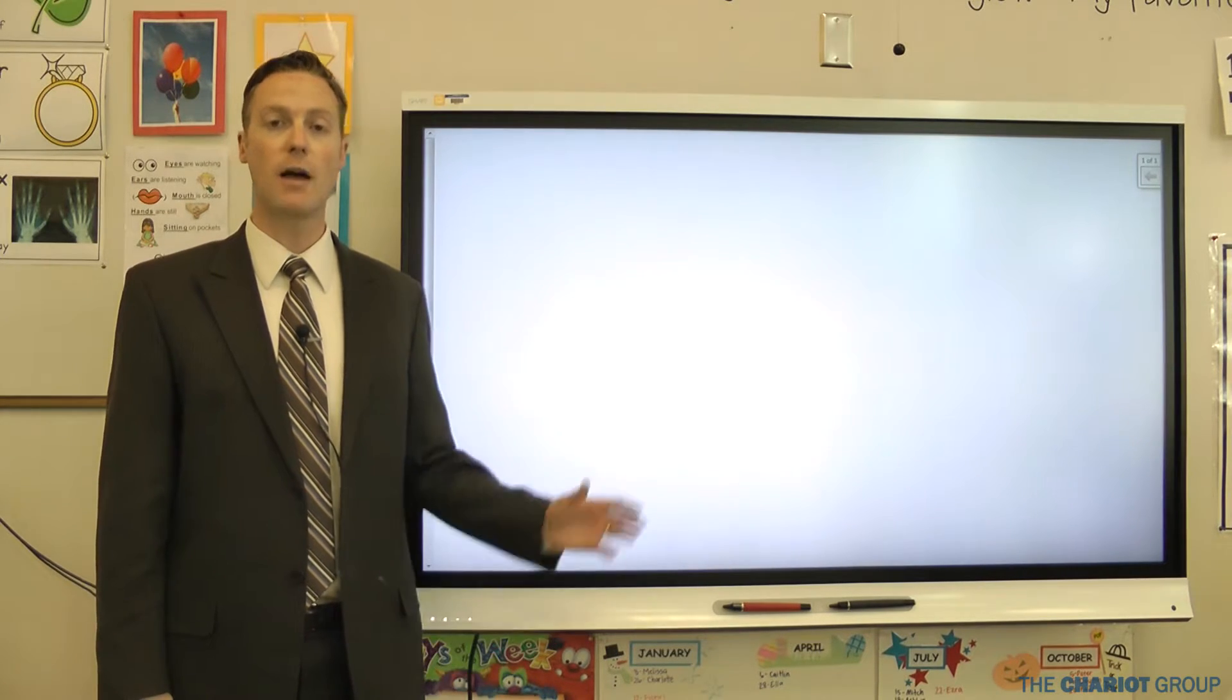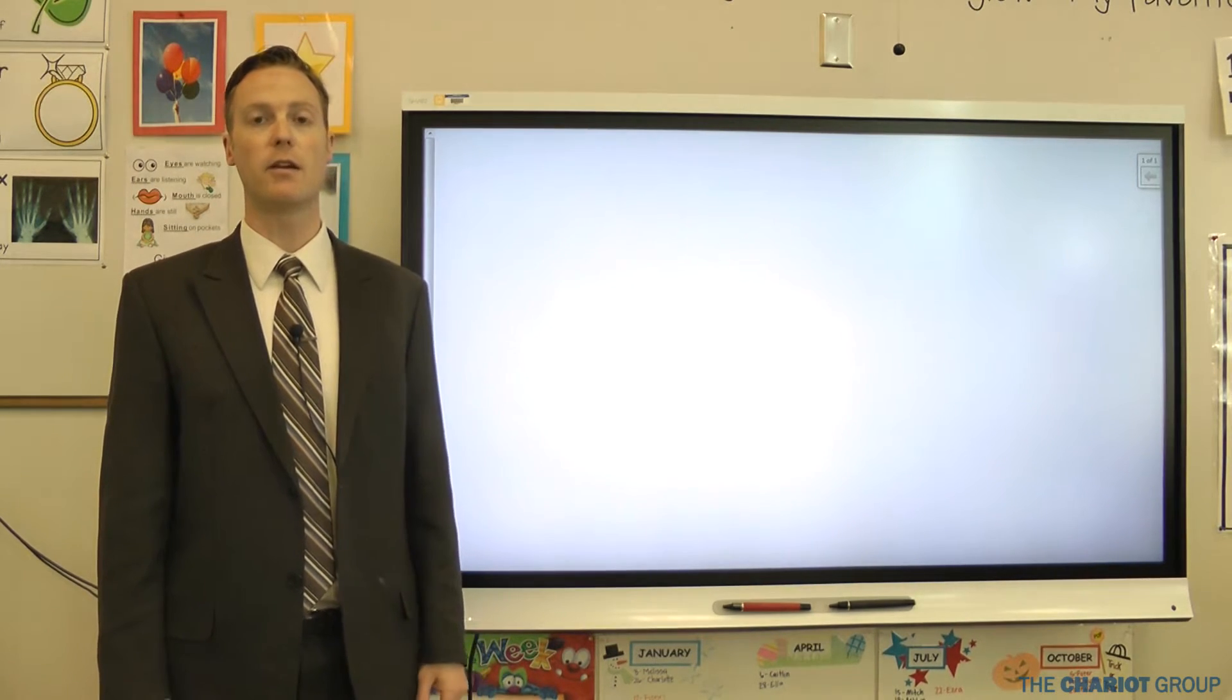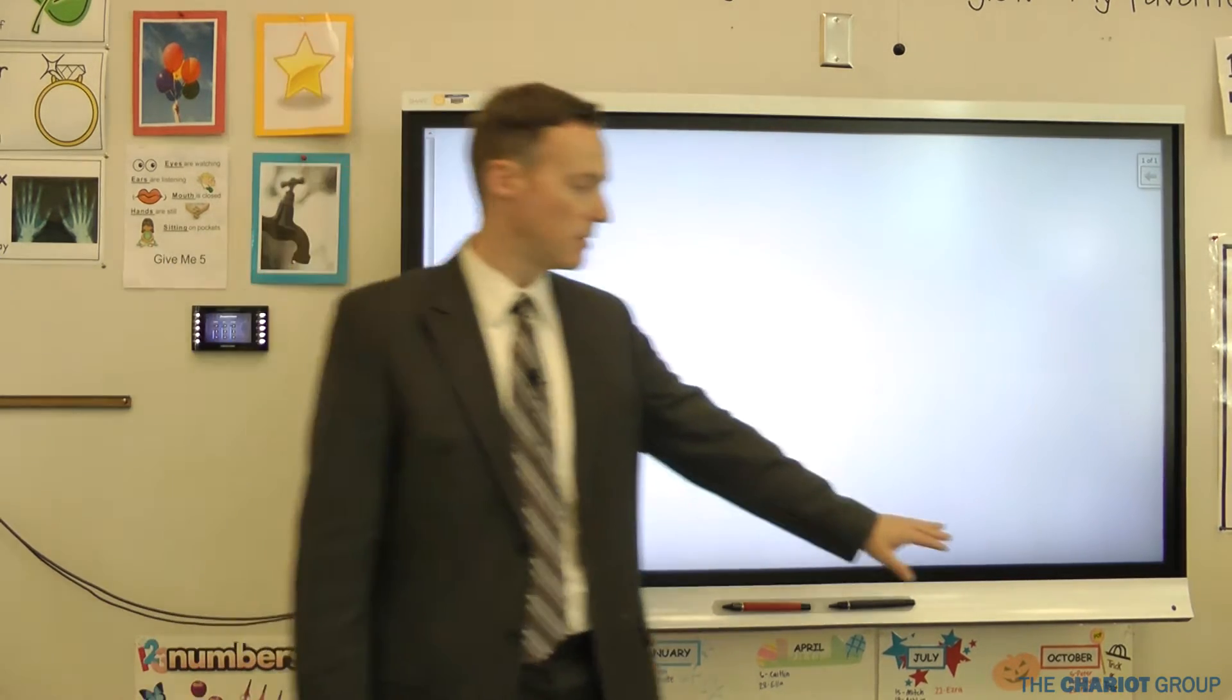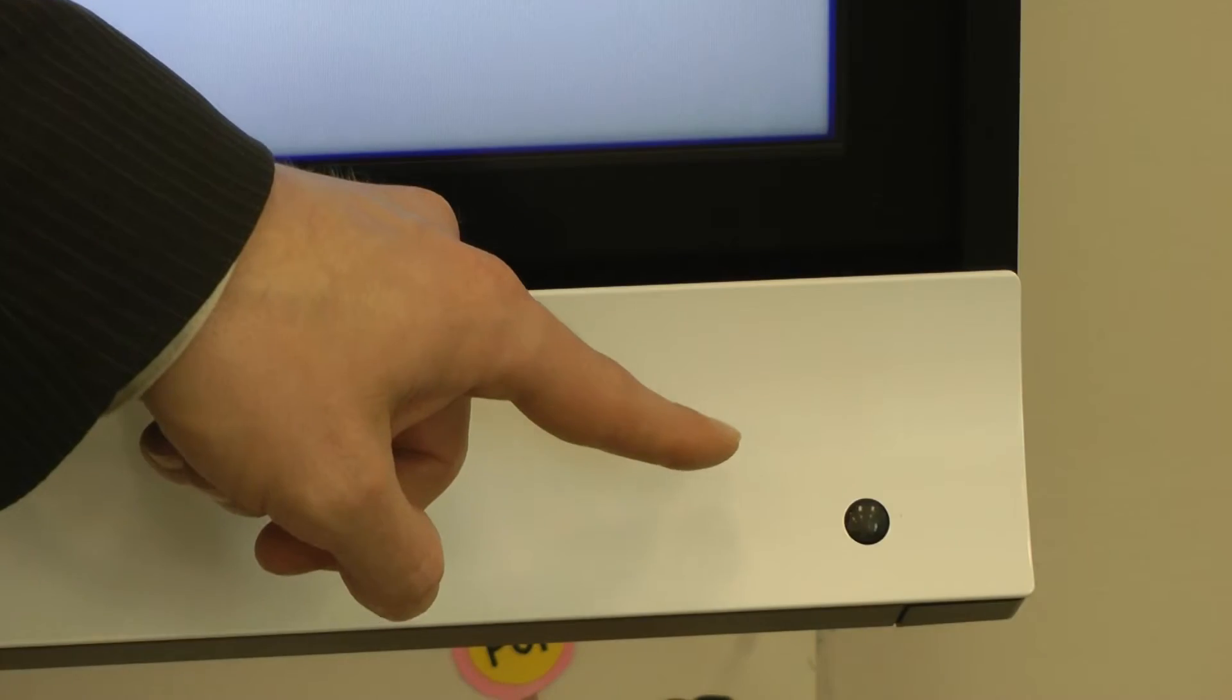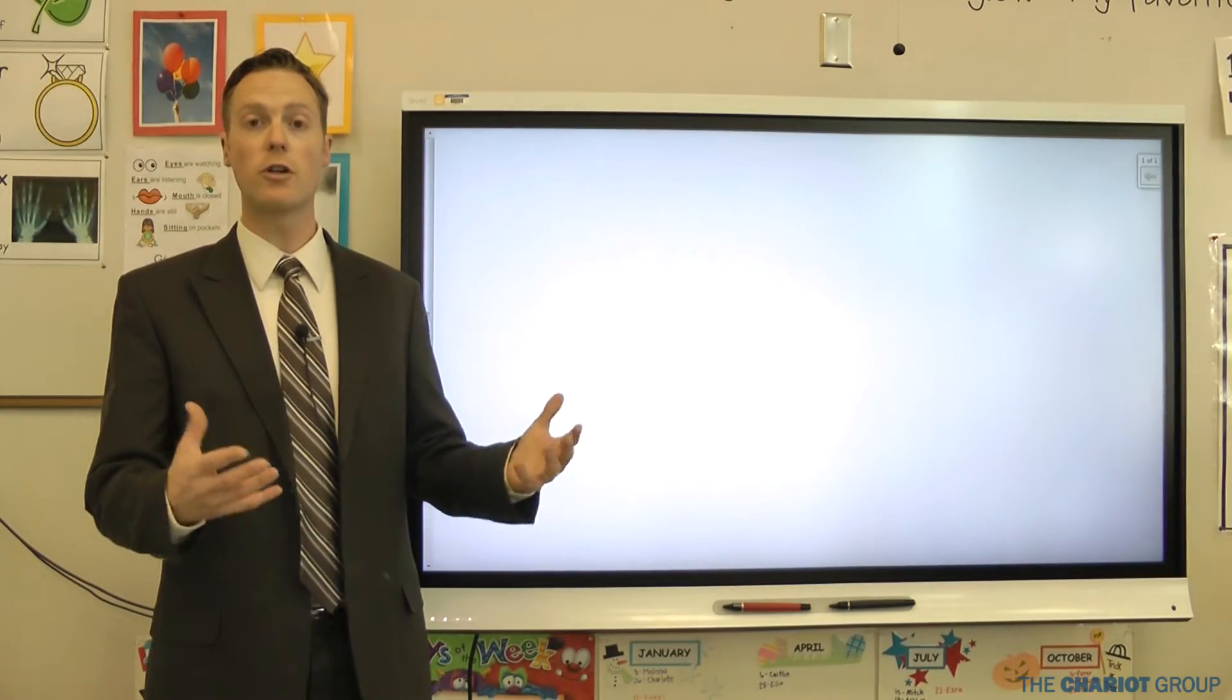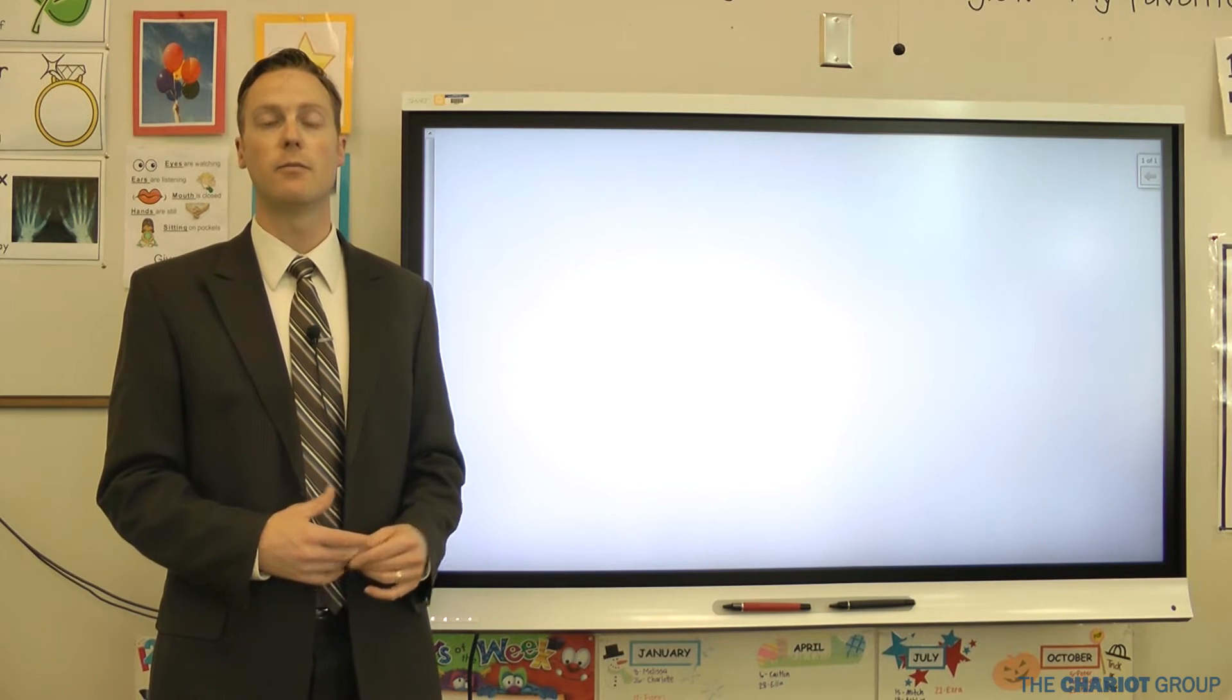Smart flat panels like the 6065 you see here has a proximity sensor and you're going to find that on the bottom right. It looks like a little circle right there, and what that does is sense when you get close to the board and turn on the display because it knows you're there.